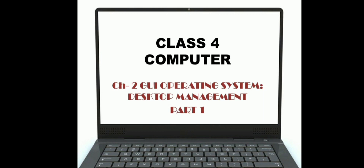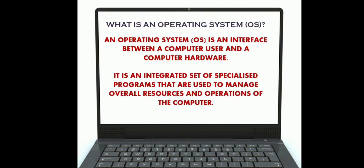Today we will start a new chapter, that is chapter 2: GUI operating system desktop management. Kids, in class 3 you have read about operating systems. In this class we will also discuss what is an operating system. An operating system is a program that acts as an interface between the software and the computer hardware. It is an integrated set of specialized programs used to manage overall resources and operations of the computer.